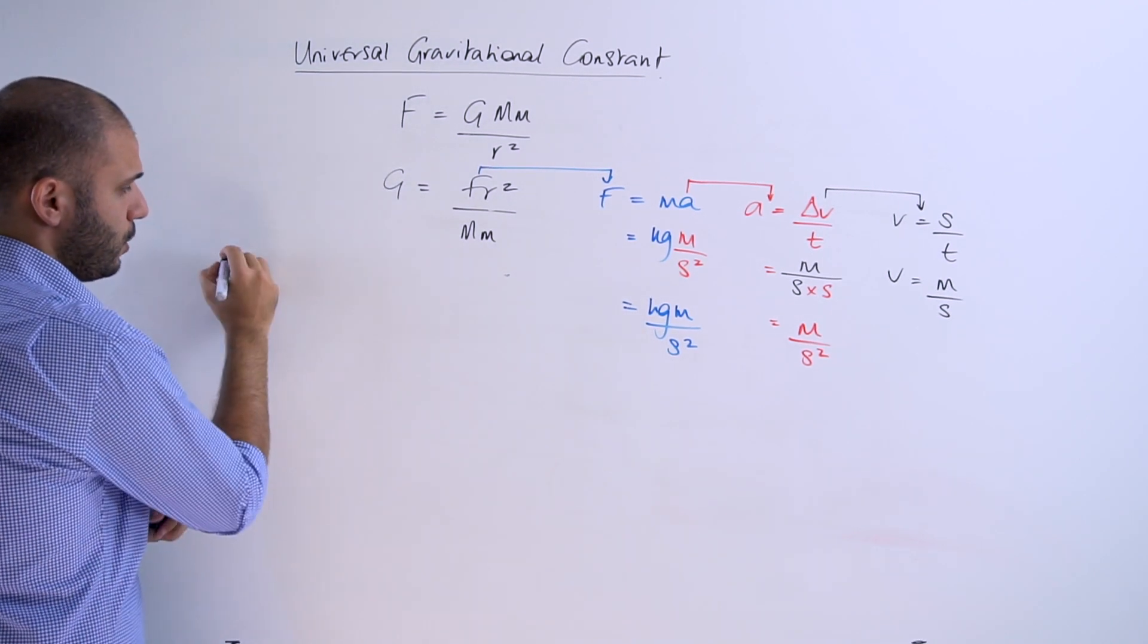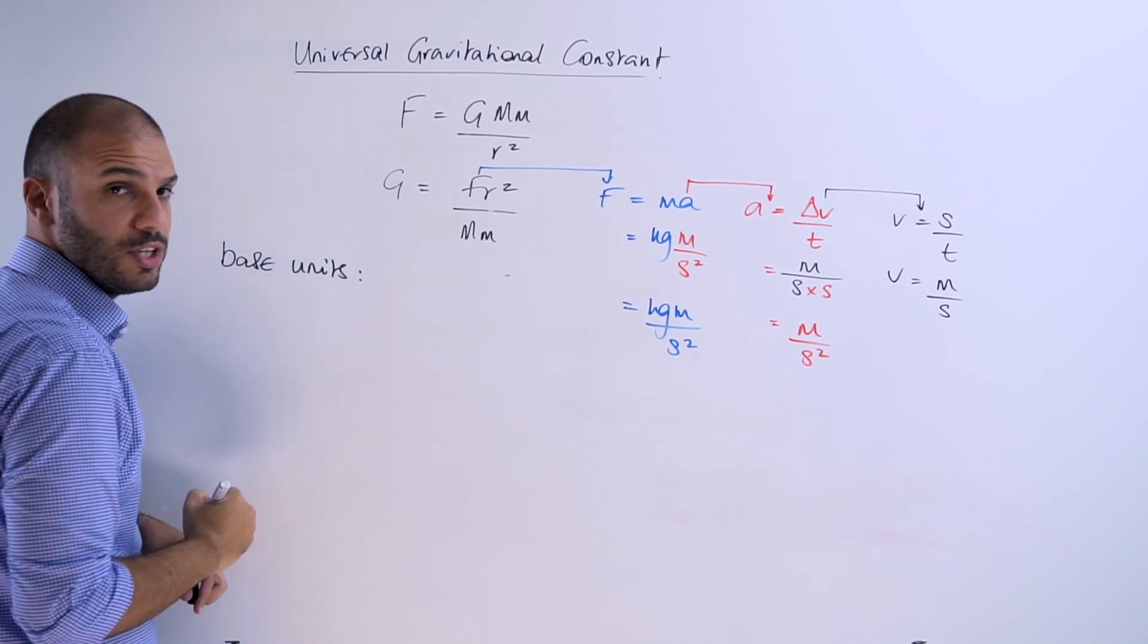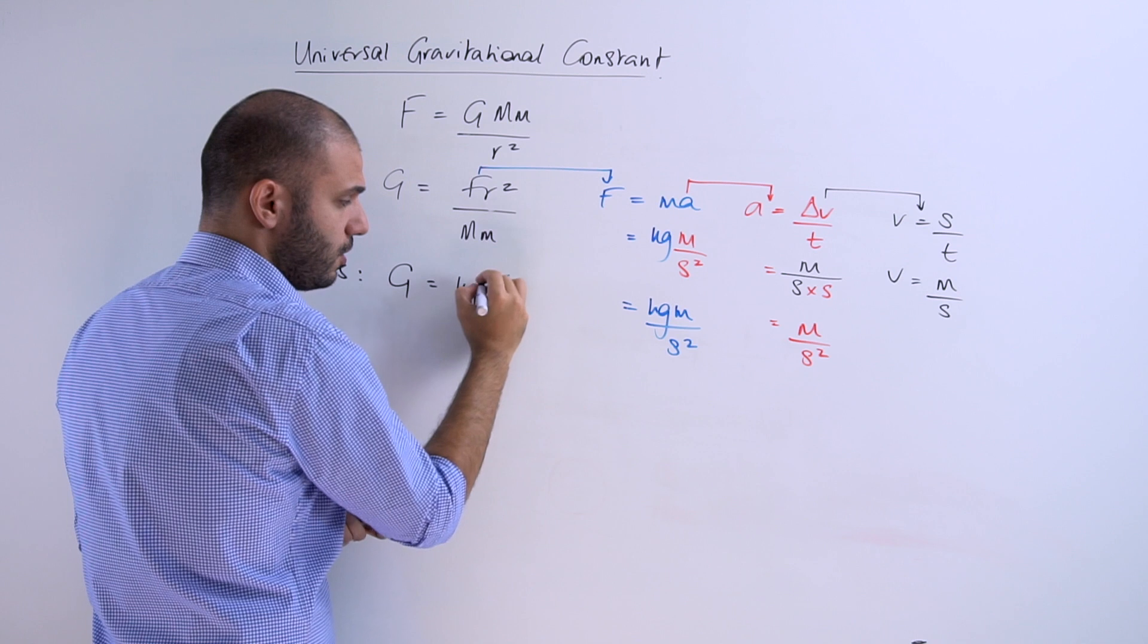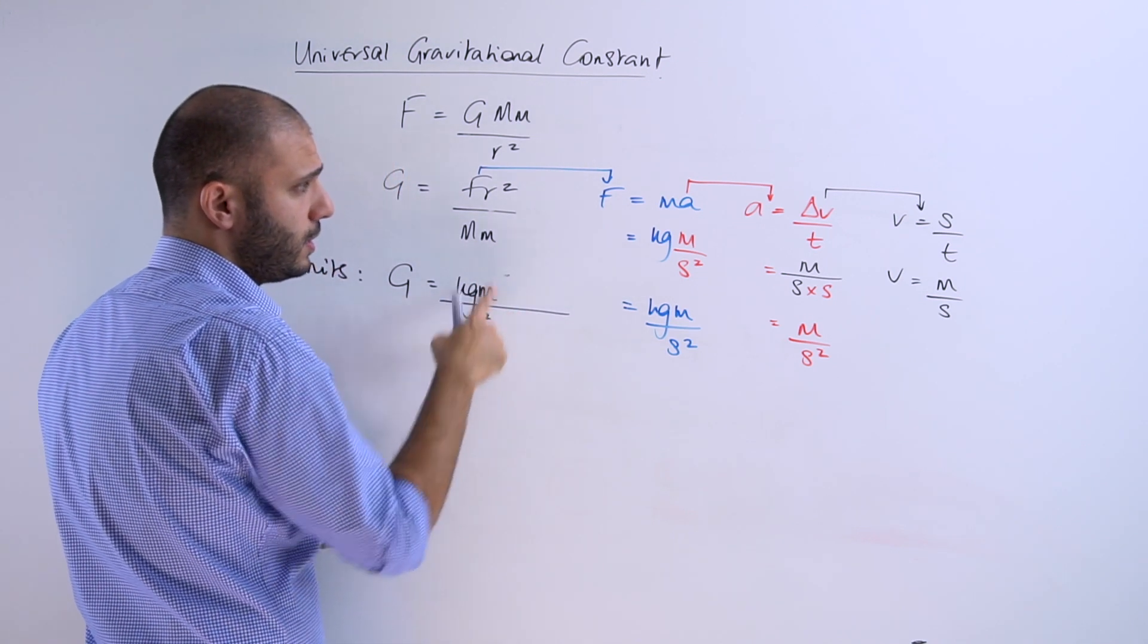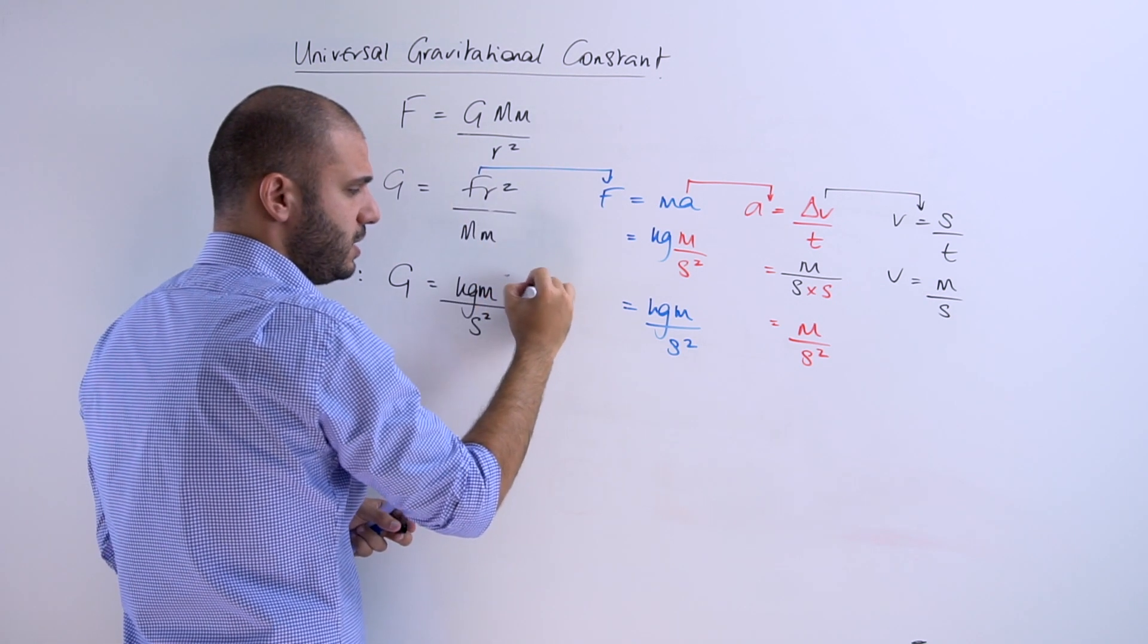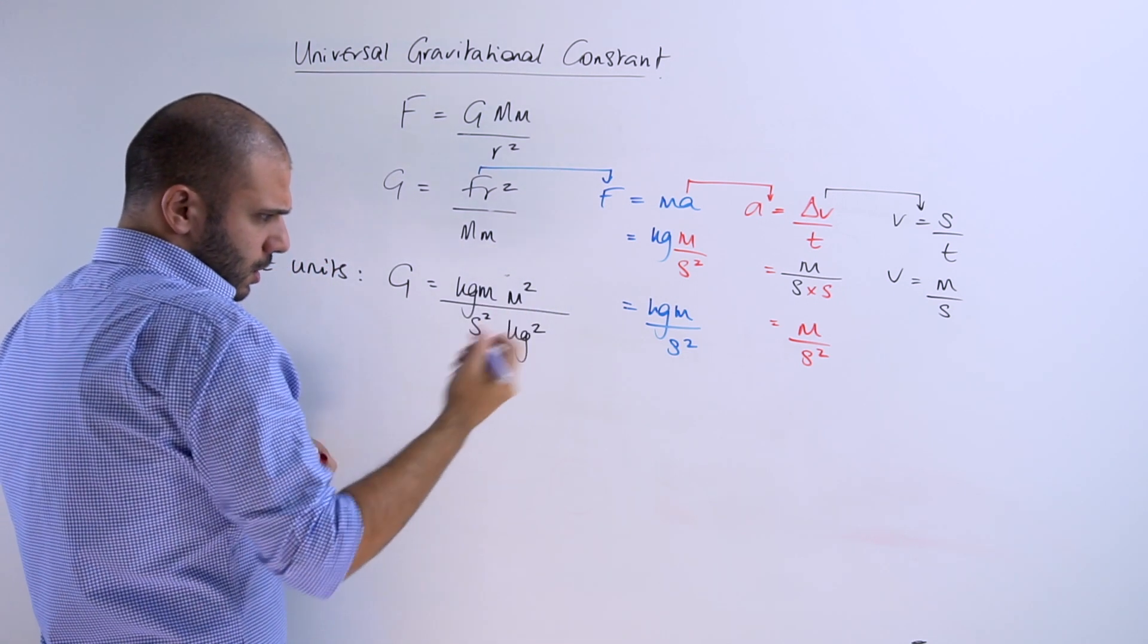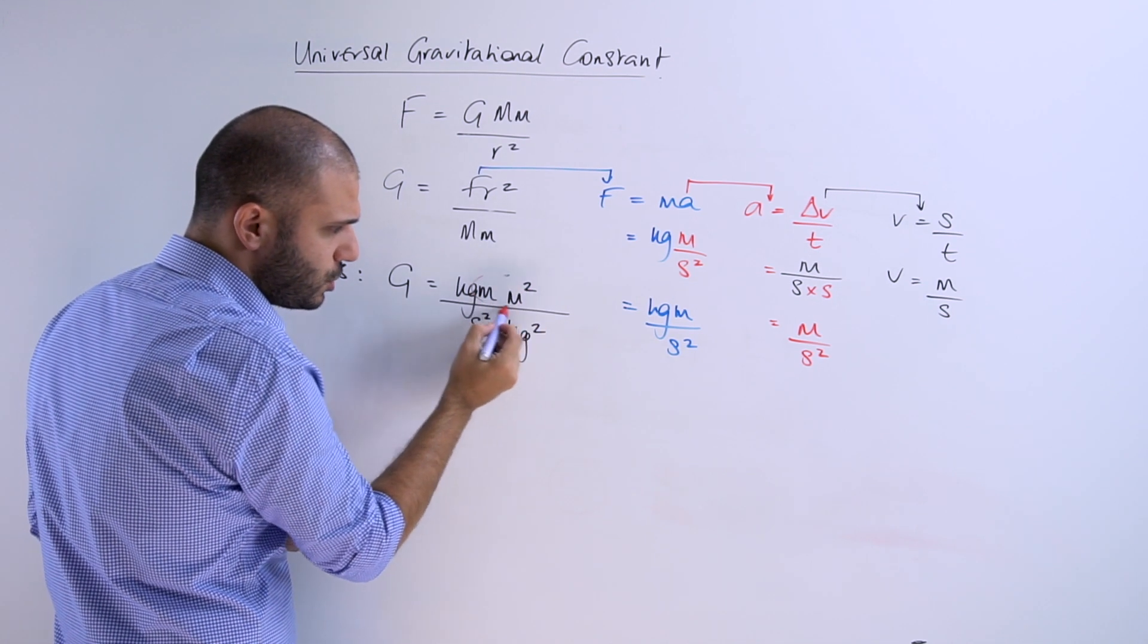This time round we're going to start writing everything in terms of their base units. So G in terms of its base units is you've got force and force you've got all of that. So that is kilogram, meter and in the denominator you've got a second squared. There's distance squared here. So that's going to be another meter squared. We can simplify such an equation. We can have these two.